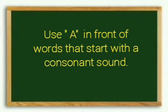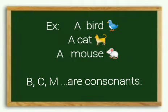Use A for words that start with a consonant sound. A bird, a cat, a mouse. B, C, M are consonants.